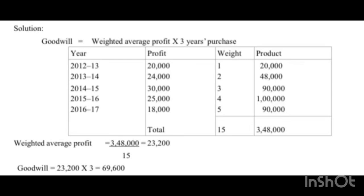The average profit method has two variants: simple and weighted. Simple: Goodwill equals Average Profit into Number of Years' Purchase. Weighted: Goodwill equals Weighted Average Profit into Number of Years' Purchase. This is the first method in the valuation of Goodwill. Please like and support our channel, comment, and thank you so much for watching the video.